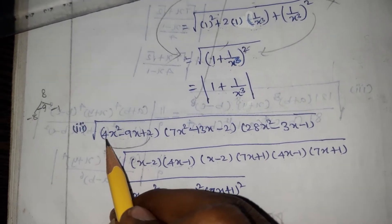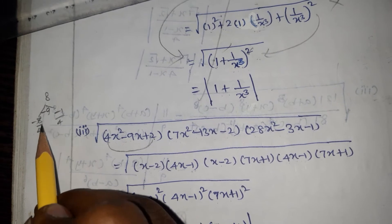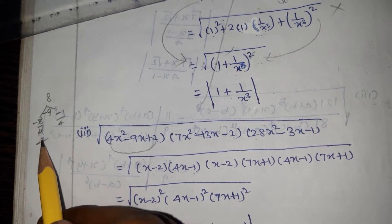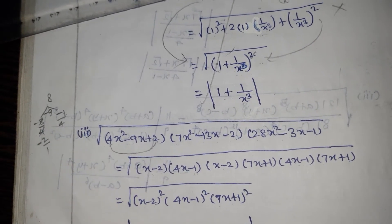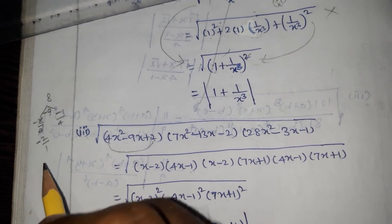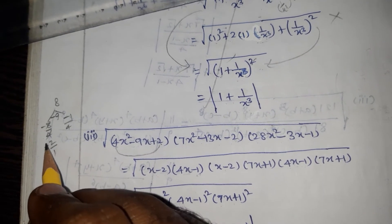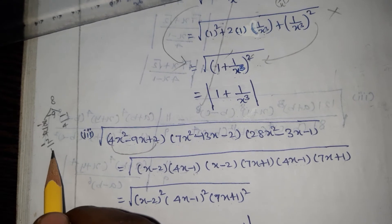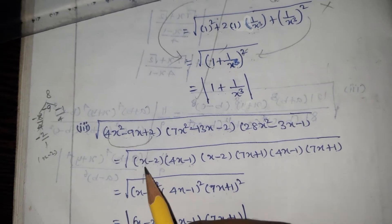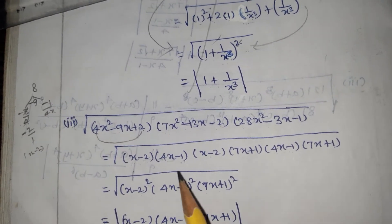The x squared coefficient is 4, so we divide by 4. Canceling, we get the factors. Since minus 8 and minus 1 give product 8 and sum minus 9, the factors of 4x squared minus 9x plus 2 are 4x minus 1 and x minus 2.